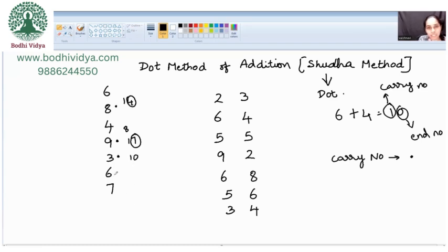0 plus 6 is 6. 6 plus 7 is how much? 13. I need to represent 13, 1 by a dot here. 3 is the last number, the end number. Write 3 here. Now, count the number of dots: 1, 2, 3, 4. The final answer is 43.